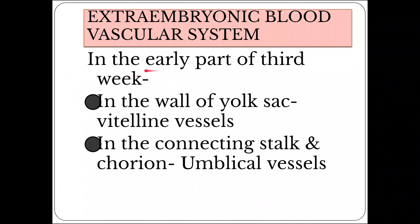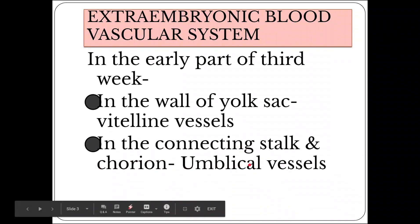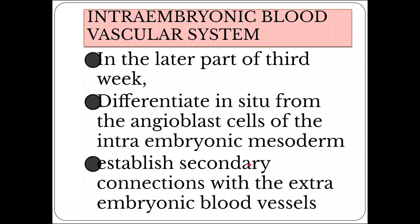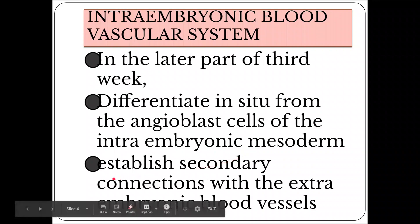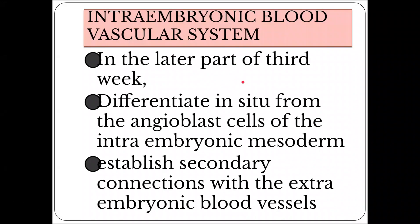In the extra-embryonic part, blood vessel development begins in the early third week. In the wall of the yolk sac they are called vitelline vessels, and in the connecting stalk and chorion they are called umbilical vessels. Development of the intra-embryonic blood vascular system occurs in the later part of the third week, again from angioblast cells of the intra-embryonic mesoderm. These then establish secondary connections with the extra-embryonic blood vessels.